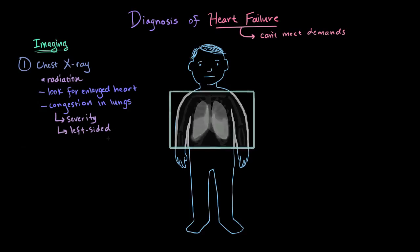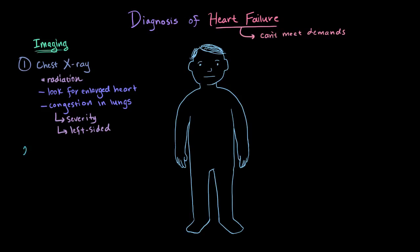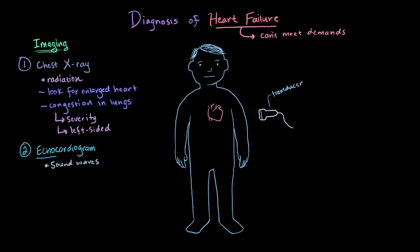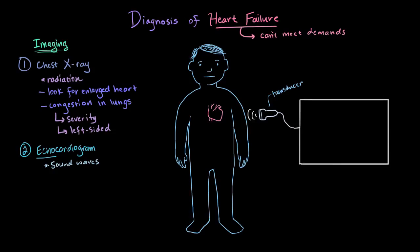Besides x-rays, another diagnostic imaging technique that's probably more common for heart failure is the echocardiogram. If we look at the first part of this word — echo — it kind of clues us into its meaning. This diagnostic uses sound waves instead of electromagnetic radiation like with x-rays. Specifically, a transducer sends out sound waves and then waits for them to bounce back, or echo. By knowing certain properties of the tissues, like how fast sound waves move through them, we can get an image and even sometimes a real-time video.